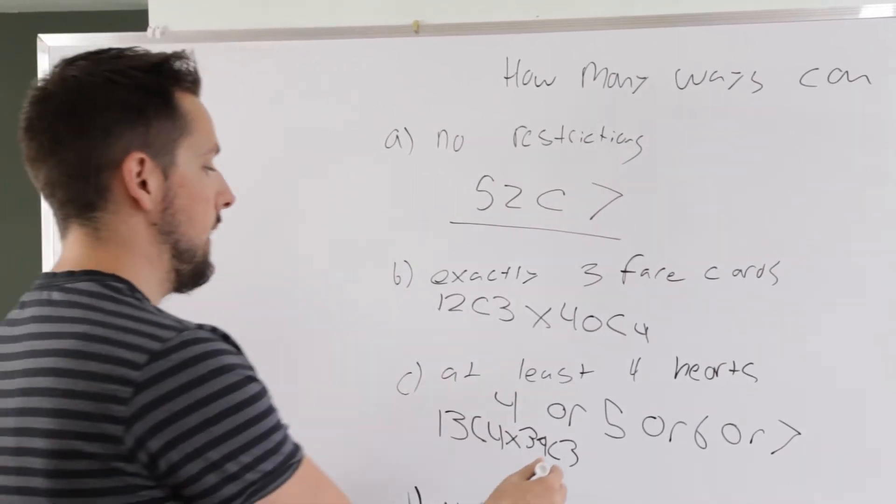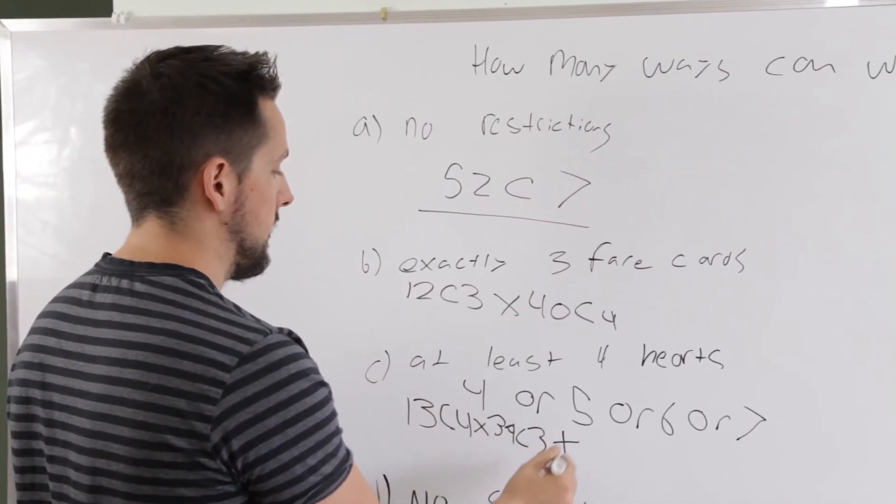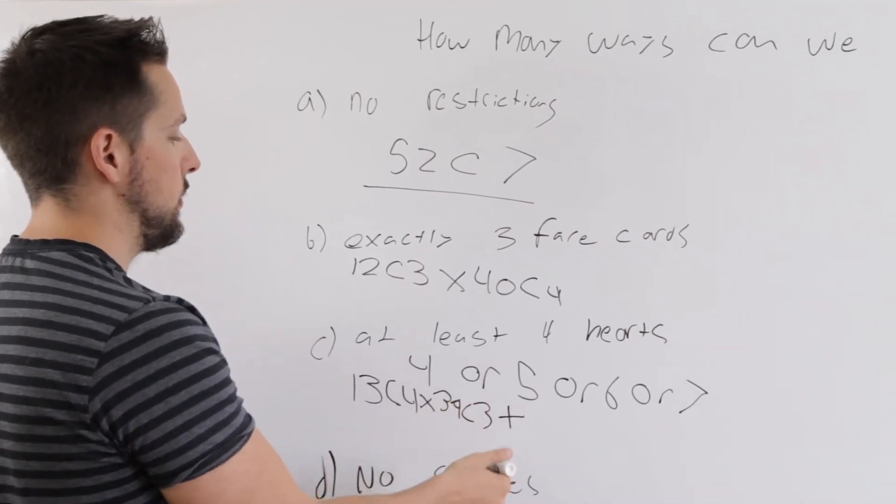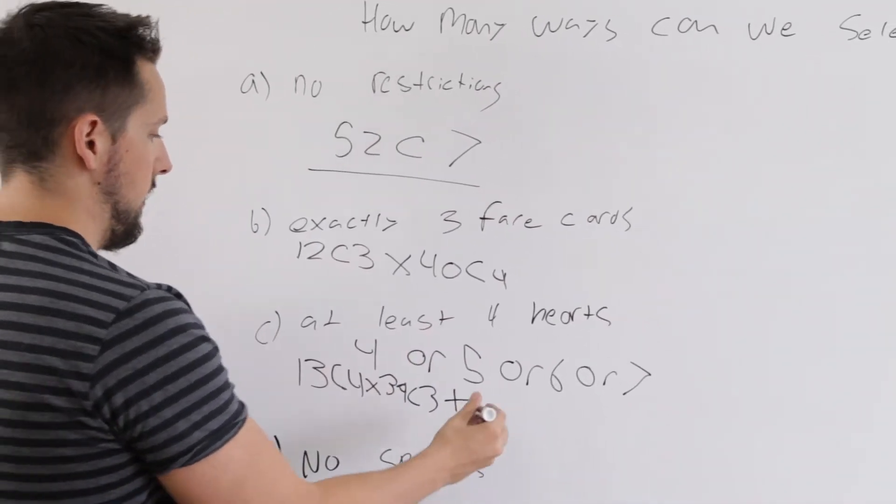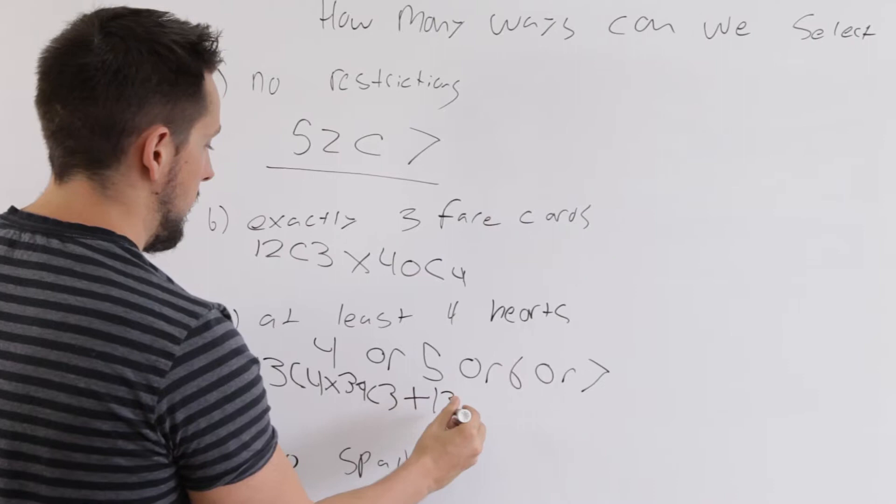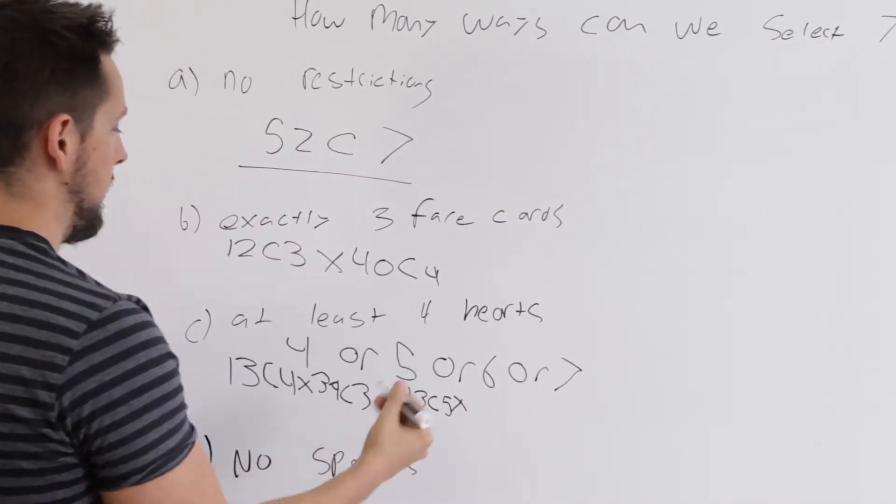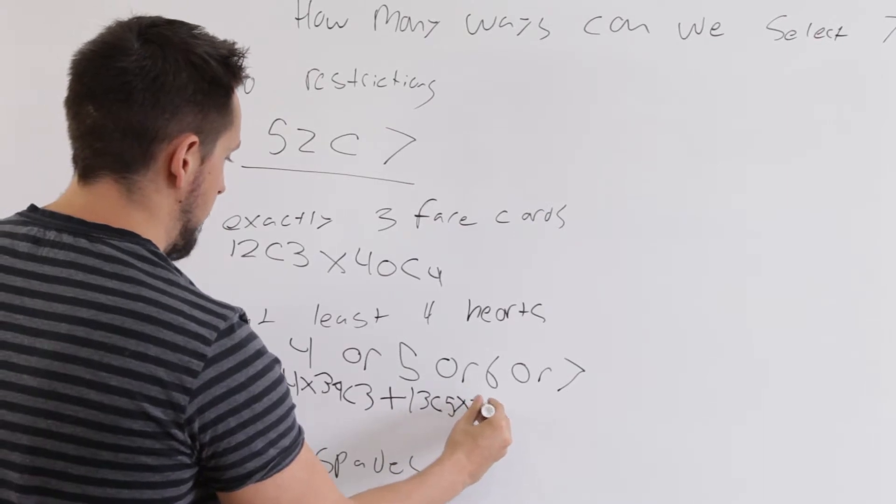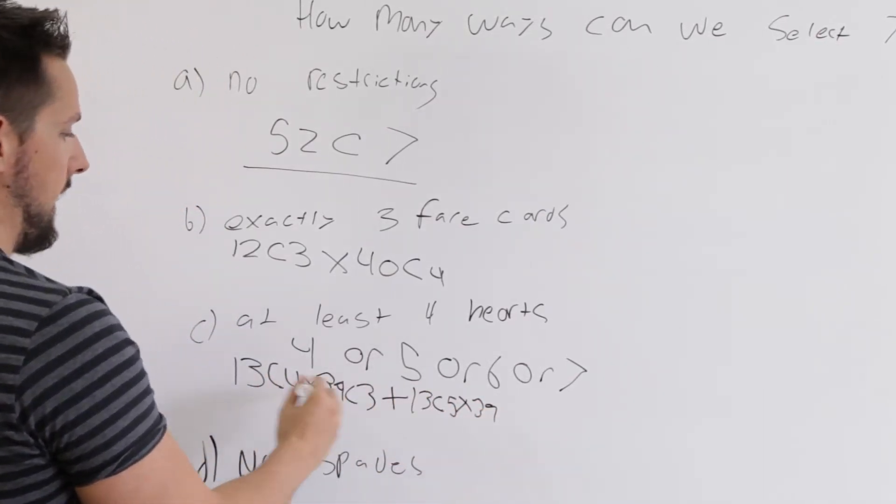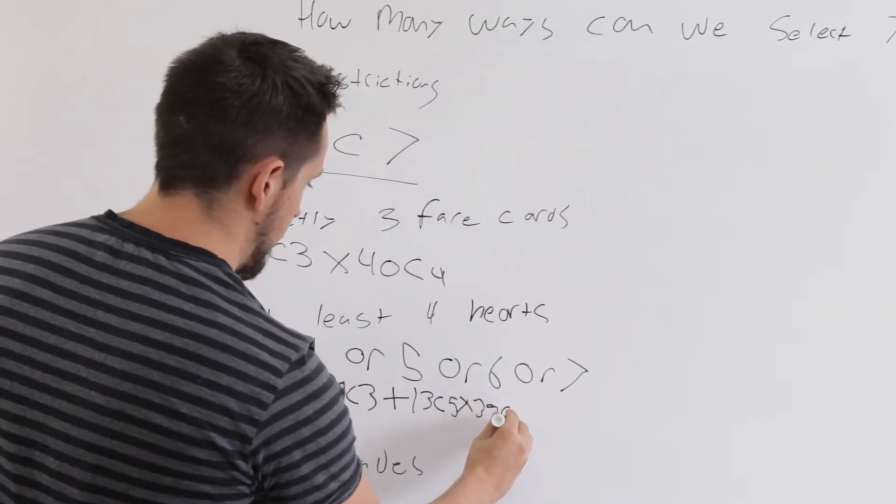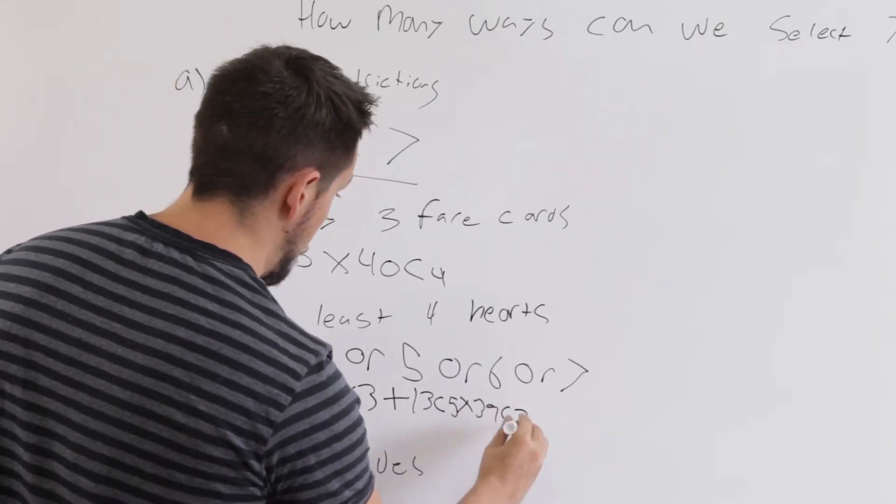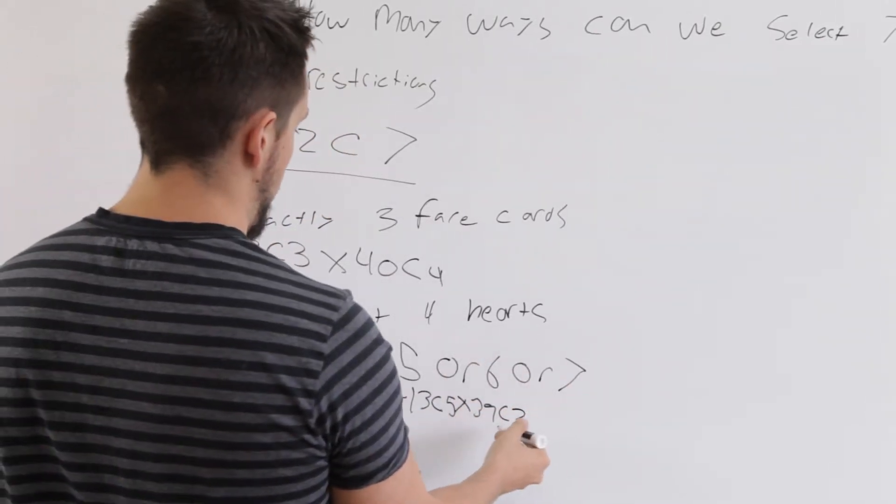Or we can do five. So the or is represented by a plus. And now we have to do the same thing for choosing five hearts. So it's 13 hearts total. Choosing five. And we're picking the rest of the card. So it's 39. And this is always going to have to add up to seven because that's what we're taking. So 39 choose two. So that's for five.